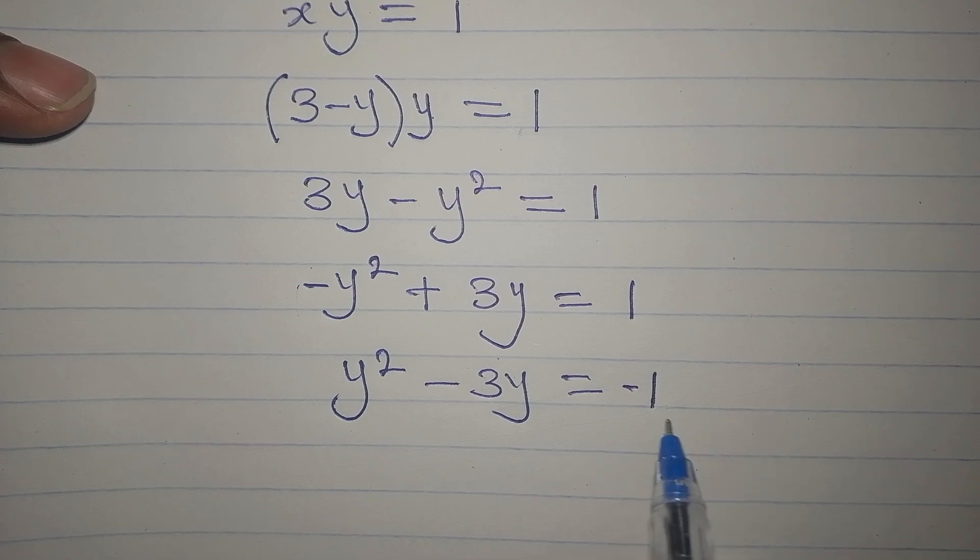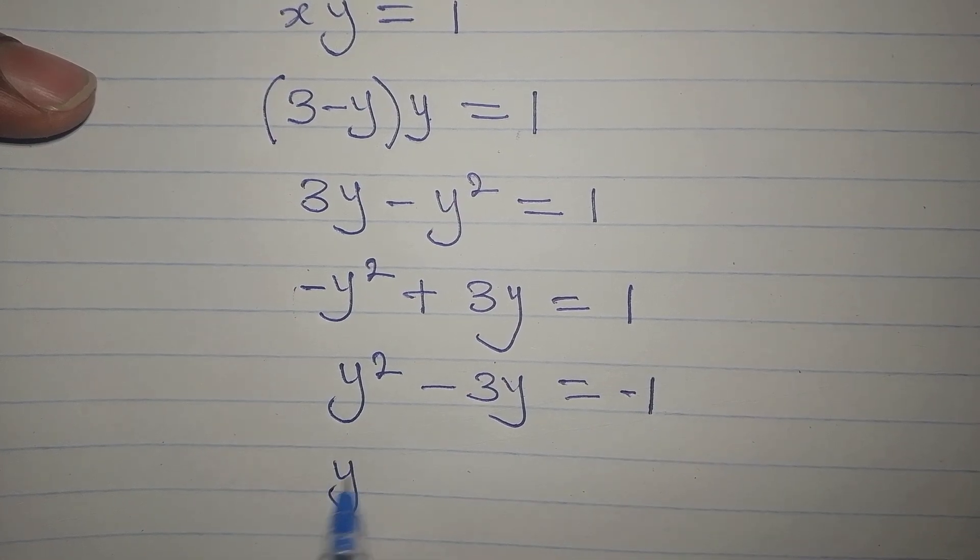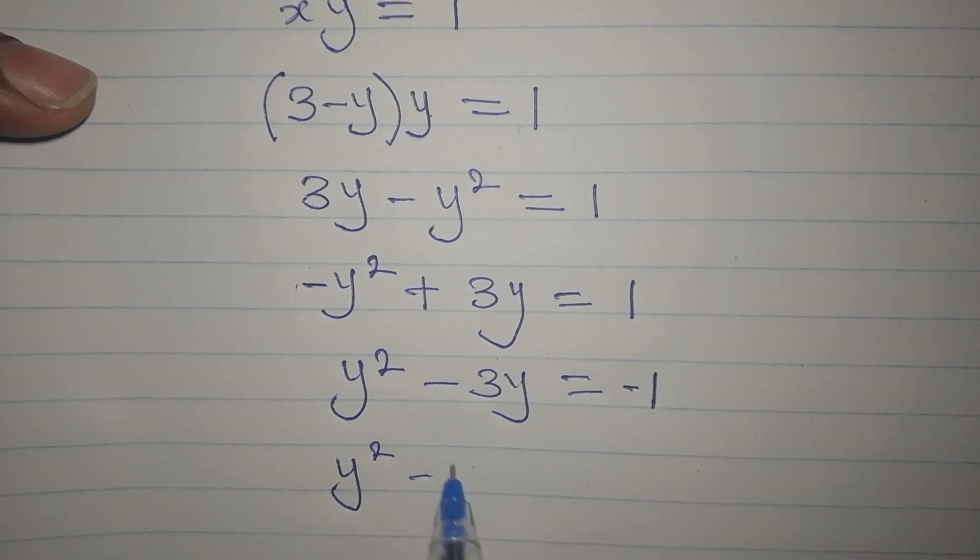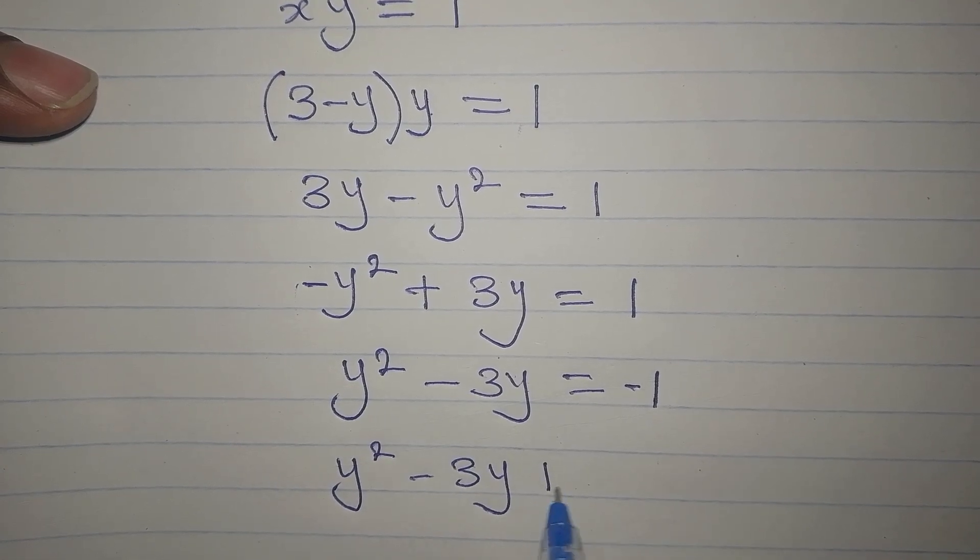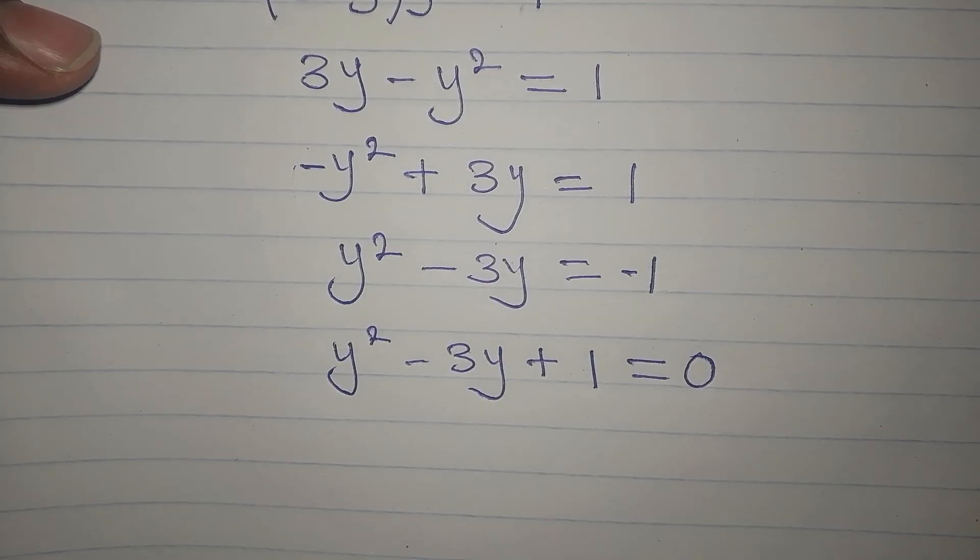Now, the next step is to bring this minus 1 to the left so that we now have y squared minus 3y plus 1 equals 0.